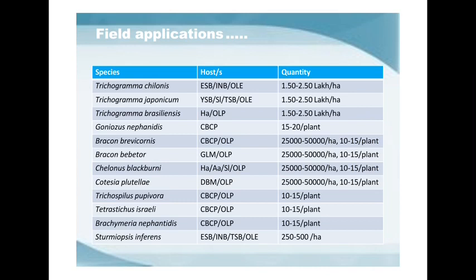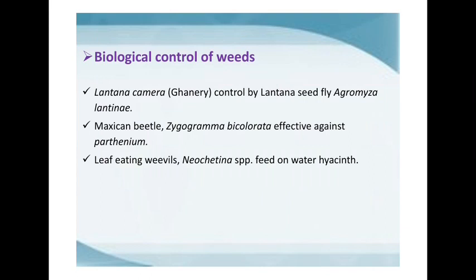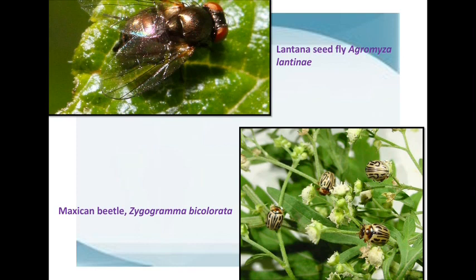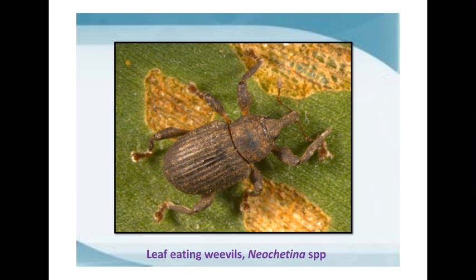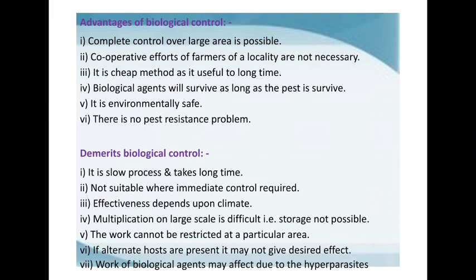Field application of different parasitoids with their doses against different insect pest populations is important for practical implementation. For biological control of weeds, some insects act as weed killers: the lantana seed fly, Agromyza lantanae, attacks Lantana camara weed; the Mexican beetle, Zygogramma bicolorata, attacks parthenium grass; and the leaf-eating weevil, Neochetina species, attacks water hyacinth — an aquatic weed. These are some of the advantages and disadvantages of biological control, which is one of the most important tools of integrated pest management.